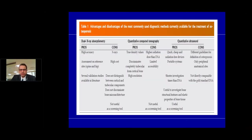To summarize the techniques: DEXA has high accuracy, looks at the relevant sites — spine and hip — with several validating studies. Cons are cost, radiation, and inability to differentiate trabecular from cortical bone. Quantitative CT is the true way of determining bone density but involves higher radiation and limited accessibility. Quantitative ultrasound is quick, cheap and radiation-free, but lacks standardized guidelines and can only be used at peripheral sites.